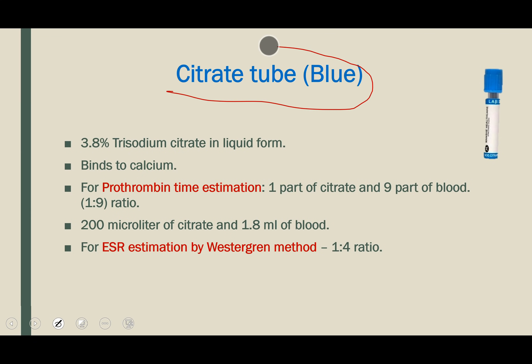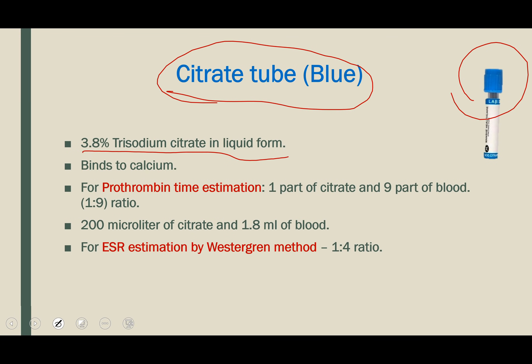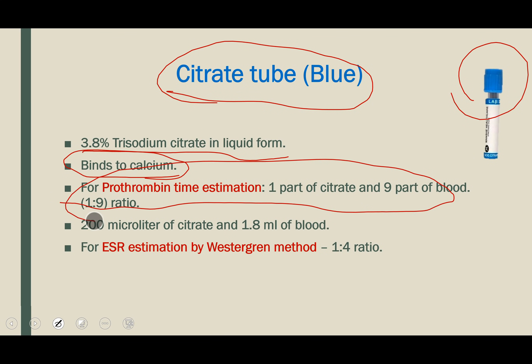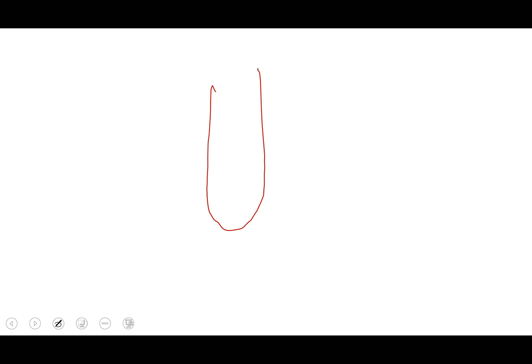Next is the citrate vial — the blue top vial. It contains 3.8% trisodium citrate in liquid form. This also binds to calcium but is a weaker chelating agent compared to EDTA. The major use is for Prothrombin Time. Many laboratories prepare their own citrate solution in glass tubes, filling 200 microliters of 3.8% citrate.